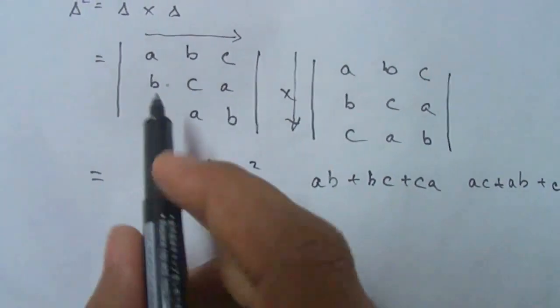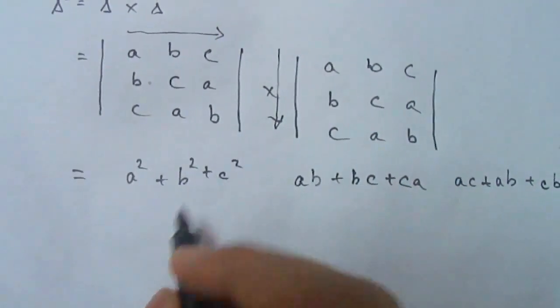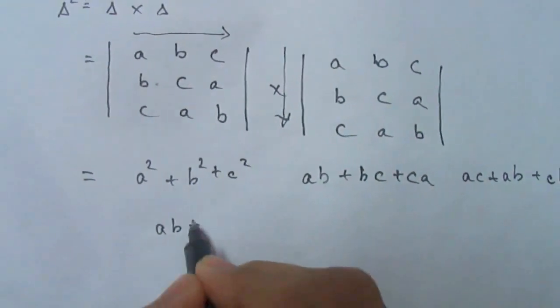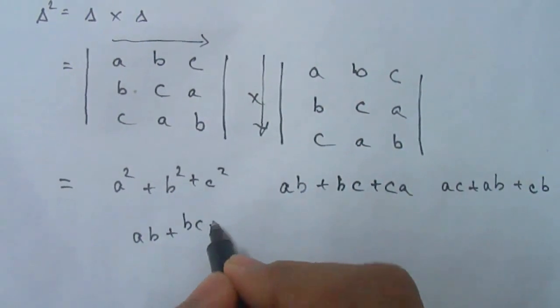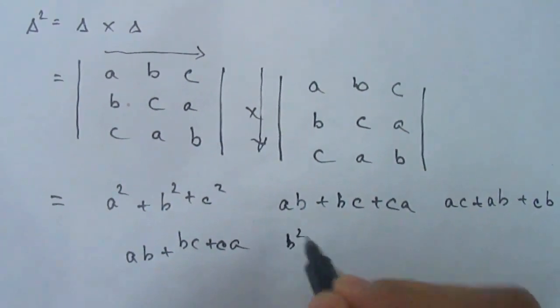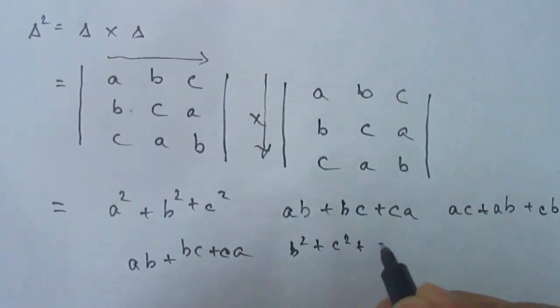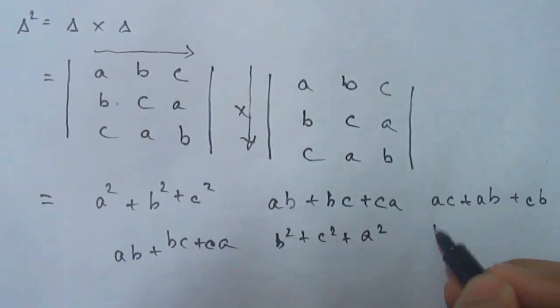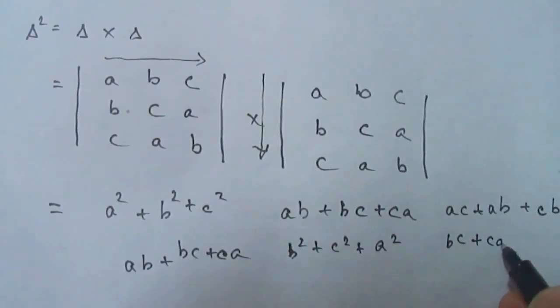Now again this row will go with this. It will be ab plus bc plus ca. This will be b square plus c square plus a square. This will be bc plus ca plus ab.